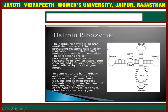The next type is hairpin ribozymes. A hairpin ribozyme is an RNA motif that catalyzes RNA processing reactions essential for the replication of satellite RNA. In contrast to the hammerhead ribozyme, hairpin ribozyme reactions involve cleavage and ligation through a catalytic mechanism that does not require direct coordination of metal ions.